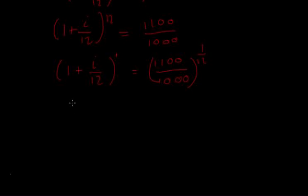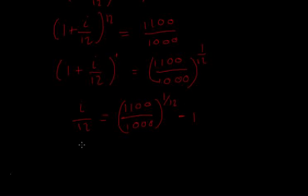And that's going to equal 1100 over 1000 all to the power of 1/12. Then what we can do is we can minus 1 to both sides, so we get i/12 equals 1100 over 1000 to the power of 1/12 minus 1.